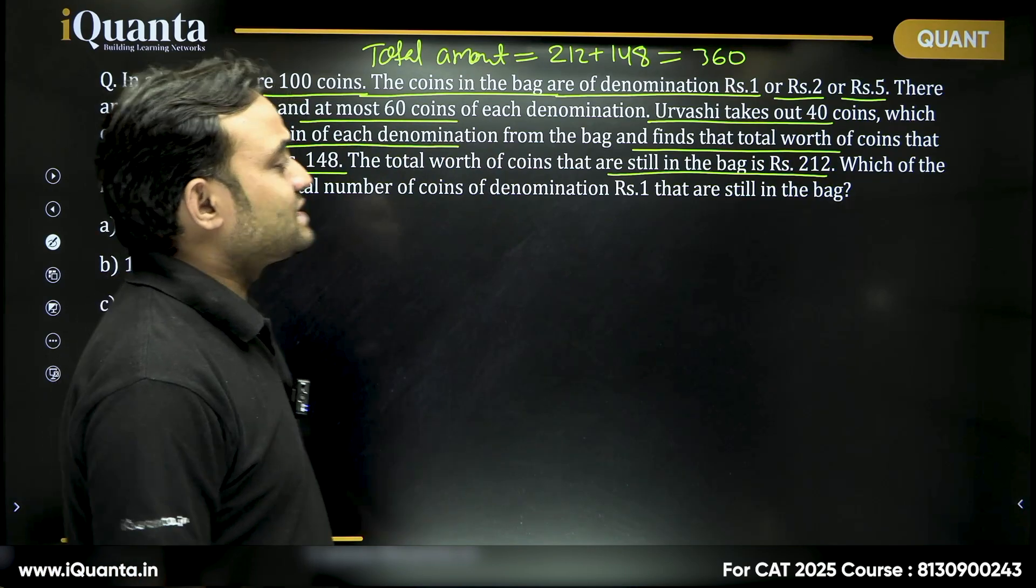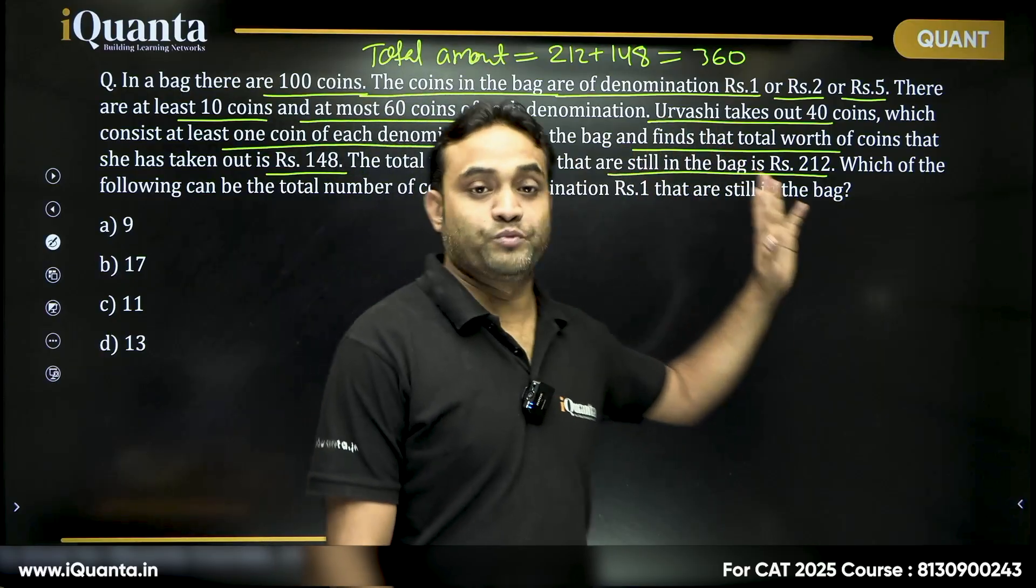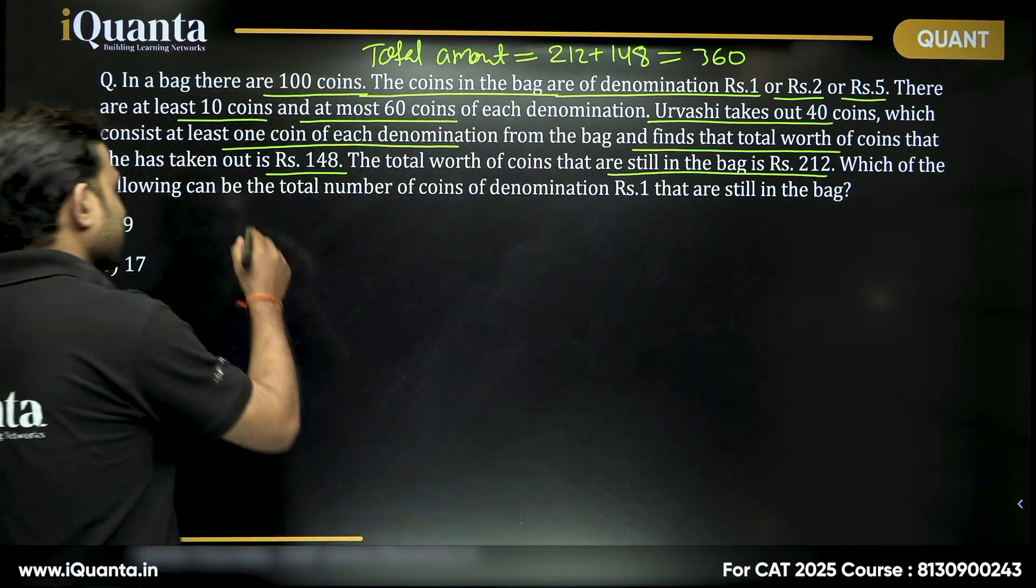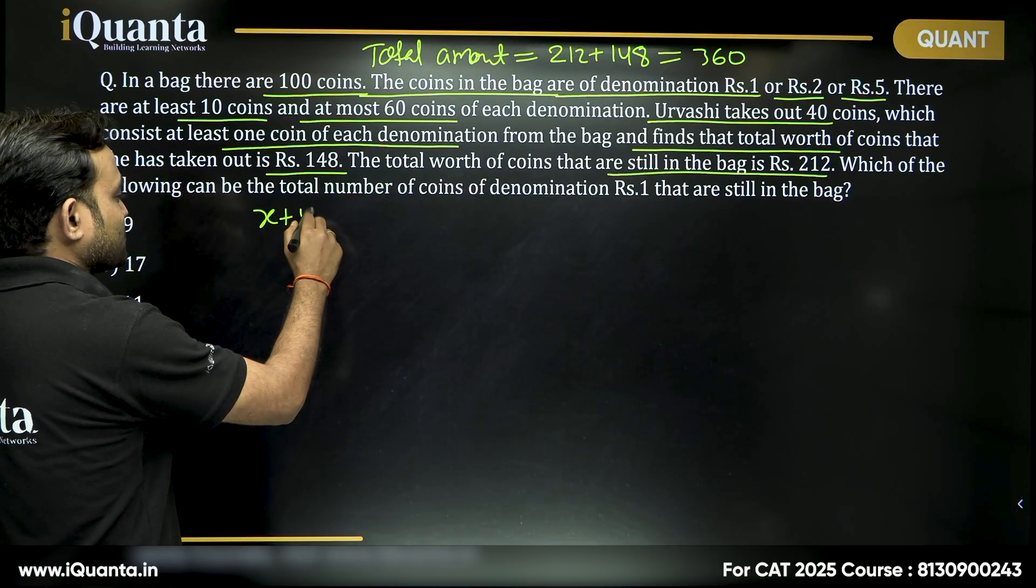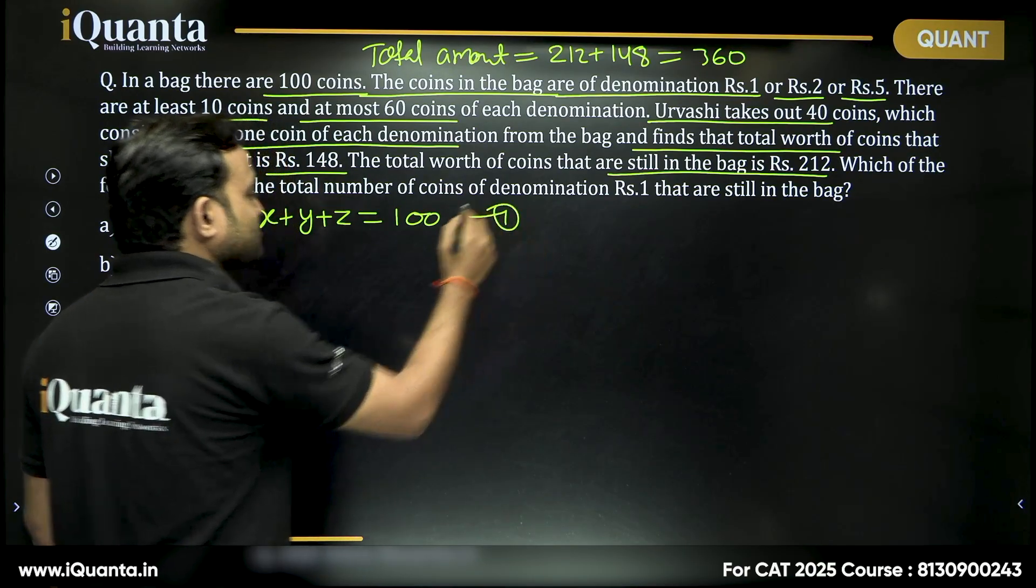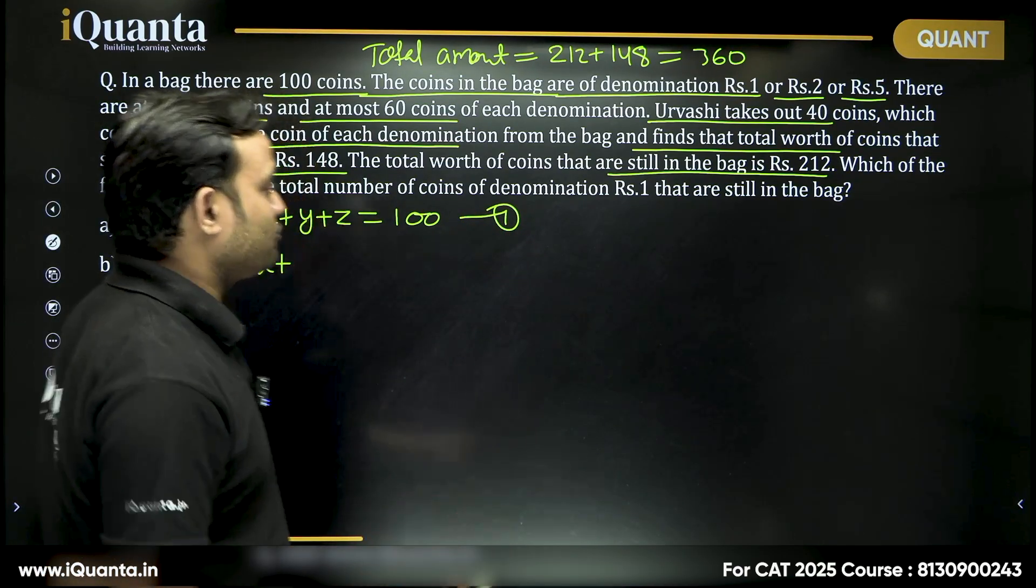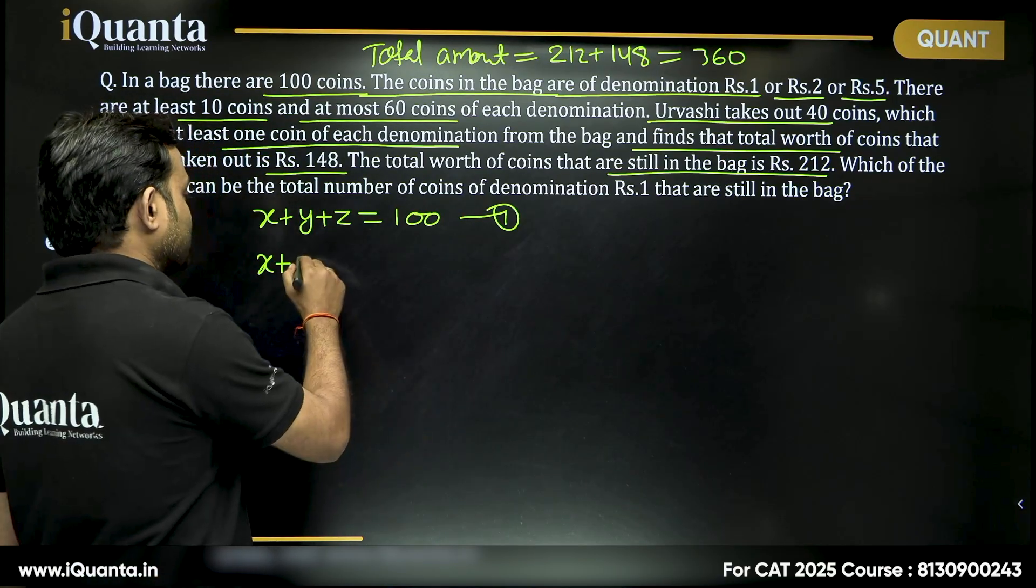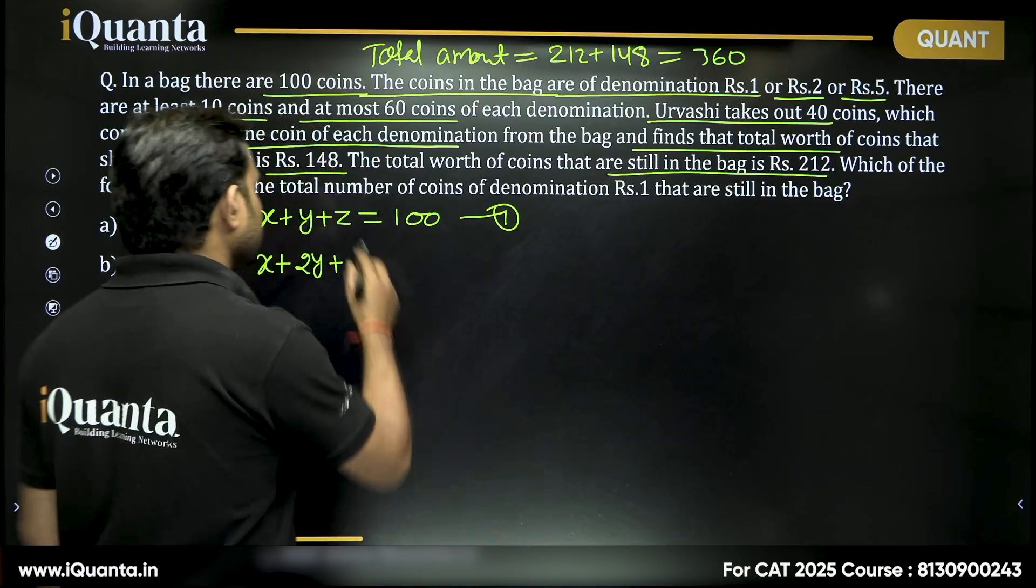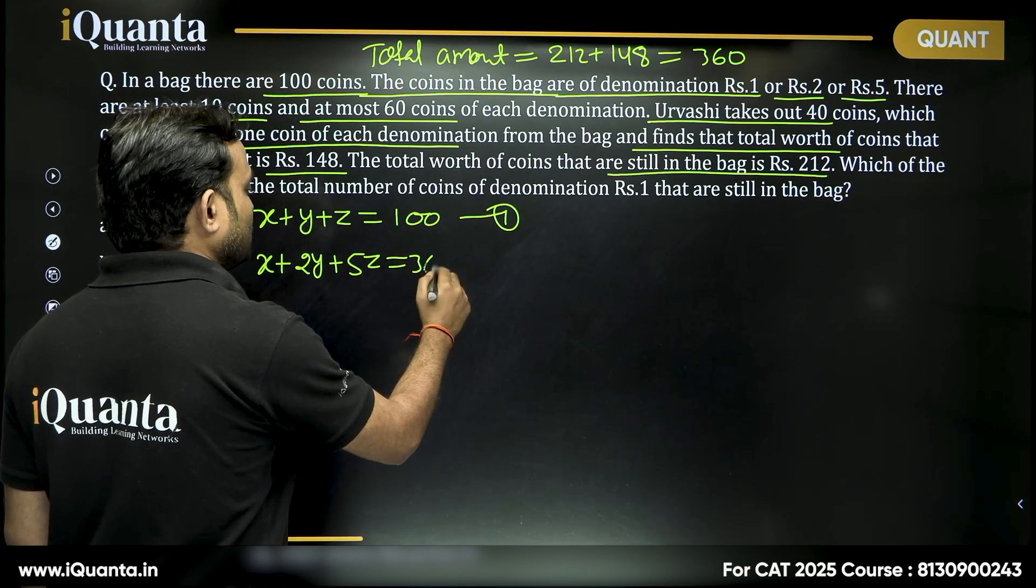Now let us say number of coins of 1 rupees is x, number of coins of 2 rupees is y and number of total coins of 5 rupees is z. Can I say that x plus y plus z should be equal to 100 as well as the total values? So x point 1 rupee value will be x rupees, y coins of 2 rupees, the value will be 2y rupees, z coins of 5 rupees value will be 5z and this should be equal to 360.